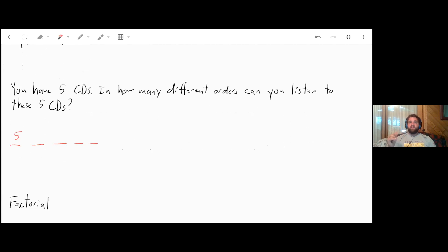And then after you listen to that CD, how many options do you have for the next? Well you had five, you listened to one, so you've got four left. And then after that you'll be down to three, and then after that you're down to two, and after that you're down to your last one. So you can multiply these all together. Five times four is 20, times three is 60, times two is 120, times one is still 120. So we have 120 different ways that we can listen to those five CDs.